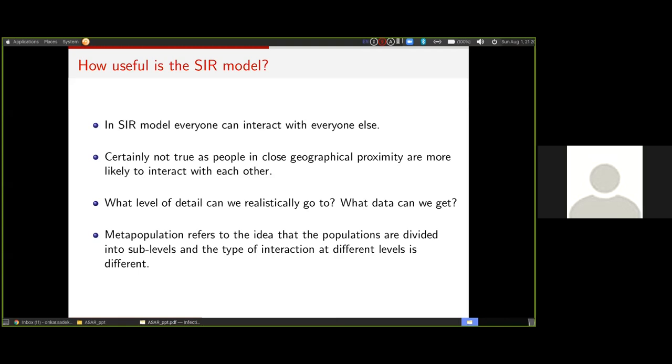It's very hard to collect data at such a level. Firstly, it's hard to collect data for 1.3 billion people, and second, even if we do get data for so many people, it would be hard to model because you'll need that kind of resolution or computing power which is sometimes simply not available. So we have to decide on what level we have to go: until what level we can assume that everyone can interact with everyone else, and beyond that people can't interact with each other.